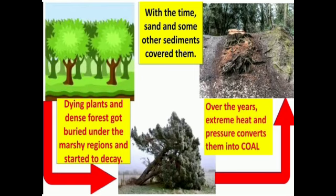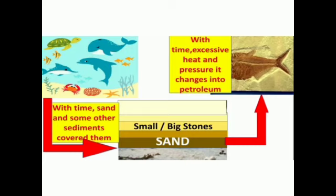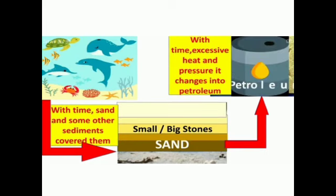Next is petroleum. Much of the energy used in the world today comes from petroleum. Petroleum or crude oil has several names like rock oil, black gold and liquid sunlight. It is formed from the dead remains of ancient land and sea creatures. Millions of years ago, the dead remains of these living things got buried in layers and gradually changed into oil and gas.